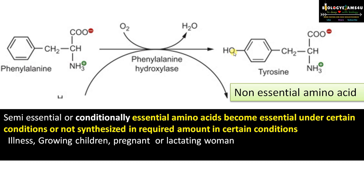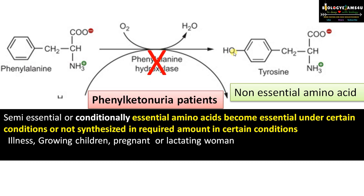In the case of a phenylketonuria patient, this enzyme is deficient. Therefore, for that patient, tyrosine becomes a semi-essential amino acid. So semi-essential amino acids are amino acids that become essential under certain conditions.